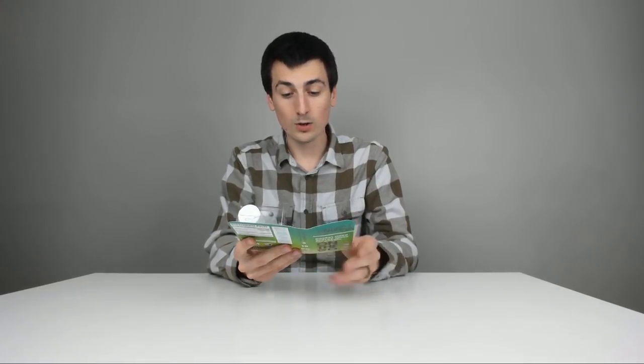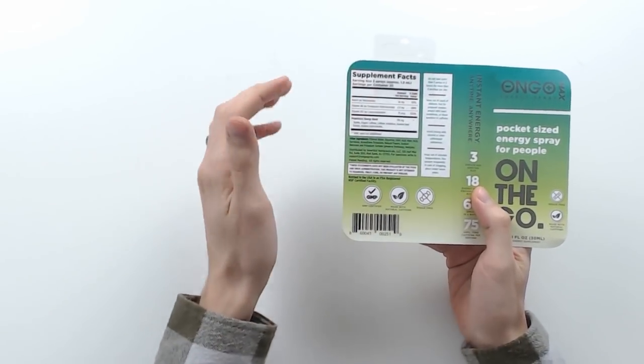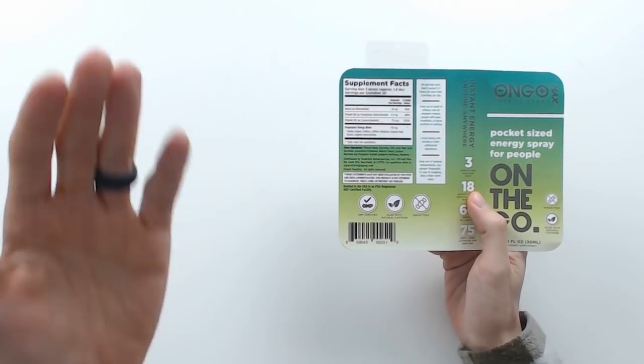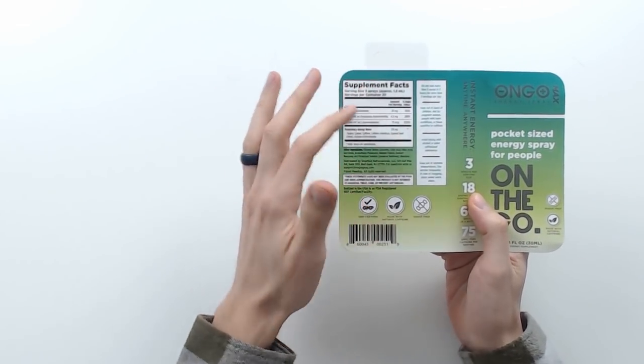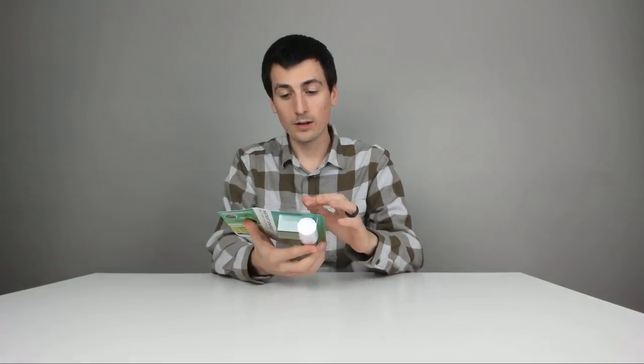So this is really nice packaging. Again, you can see they have everything clearly labeled for you. So supplement facts, niacin, vitamin B6, vitamin B12. Then they have a proprietary energy blend. So obviously they don't show you the values, but those are all the ingredients in it, which is really cool.